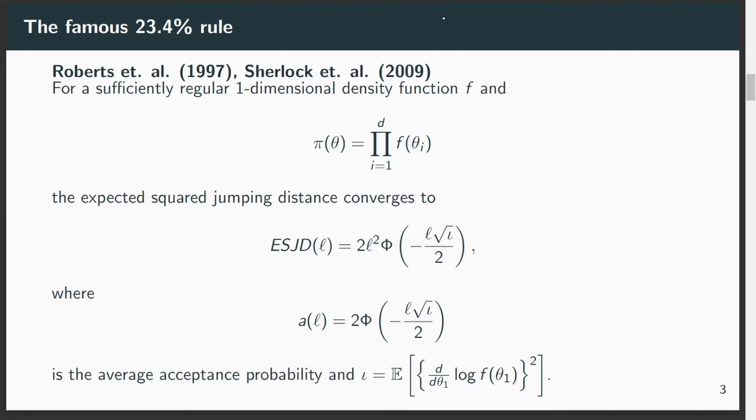In the first work as a baseline, the authors considered target distributions of this form, which is quite interesting. We see here that the target is factorizing into independent components, and based on that the authors derive that as the number of dimensions increases, we can derive a closed-form expression for the expected squared jumping distance.